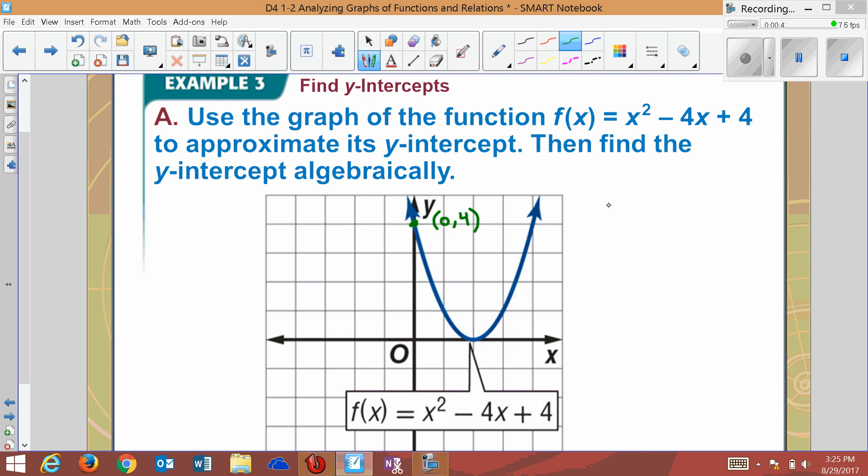If you'd plug in, you'd say f of 0 will find your y-intercept. So 0 squared minus 4 times 0 plus 4. Well this 0 squared is 0, so it's gone. Negative 4 times 0 is 0, so it's gone. So the answer is 4. 4 is my y-intercept. Alright?